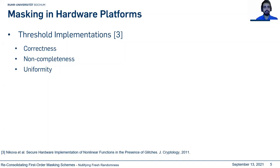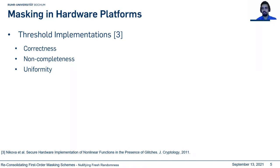To mask hardware platforms, several methodologies have been proposed. One of the first methodologies immune against glitches is Threshold Implementation (TI). TI is based on three essential rules: correctness, non-completeness, and uniformity. In this design, we make a correct and non-complete design, and by adding some correction terms, we try to find a uniform sharing.